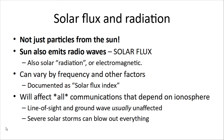Then we get solar flux and radiation. It's not just particles emitted from the sun — the sun also emits radio waves, called solar flux, also known as solar radiation or electromagnetic radiation. It can vary in its effect based on frequency and other factors. This is documented as the solar flux index, and there are websites that track it. Solar flux — the electromagnetic part of the solar waves — will affect all communications that depend on the ionosphere.